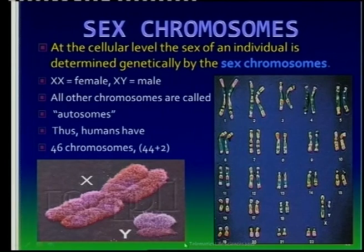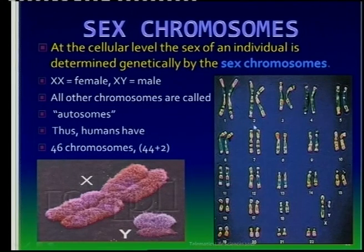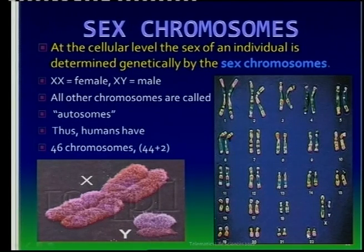Yeah, this is a karyotype. What they do is they take a photograph of a cell in its dividing phase, and then they cut out and enlarge the chromosomes. This one was treated with special color. Remember, we have 46 chromosomes, 23 pairs. 22 pairs are autosomes, and one pair form the gonosomes. And there you've got them.